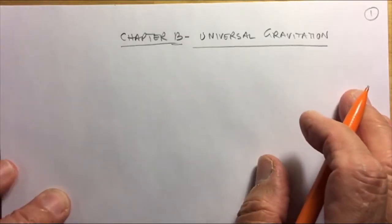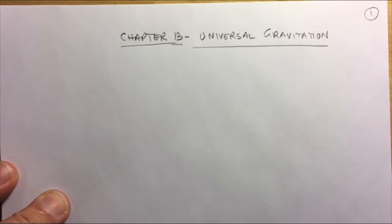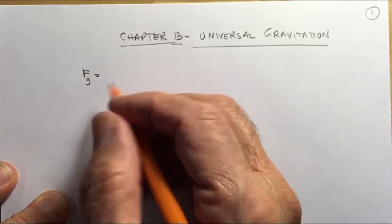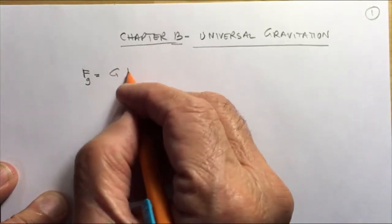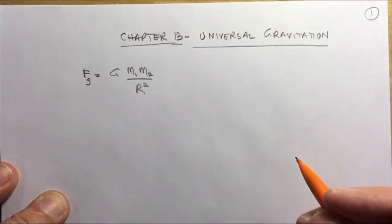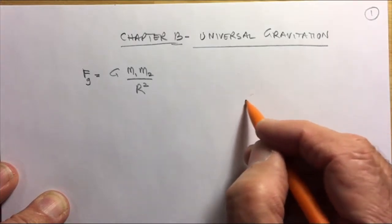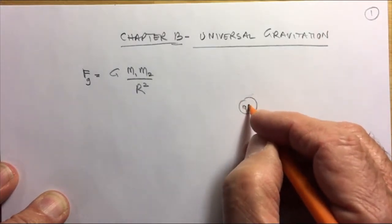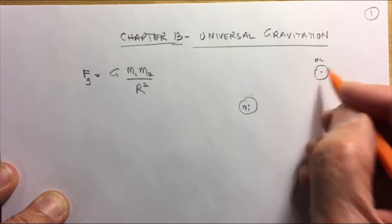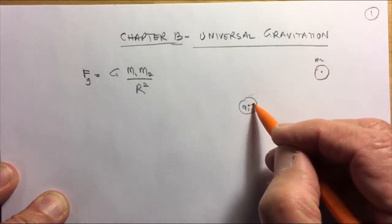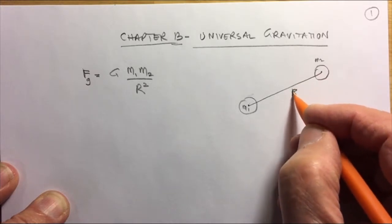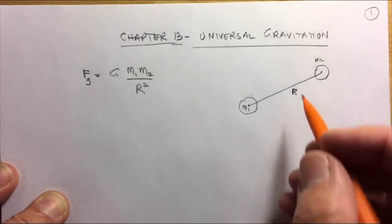The law of universal gravitation was proposed by Newton. It states that the force of gravity between two objects is some constant times the masses of the two objects multiplied together, divided by the square of the distance between them. If you have object one of mass m1 and object two of mass m2, the distance is measured from center to center, written as capital R or small r.